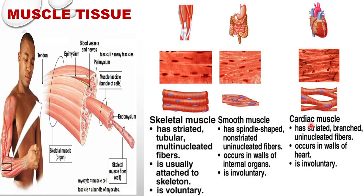The third type of muscle tissue is cardiac muscle. As the term implies, it is the muscle that forms the heart — found exclusively in the heart. Cardiac muscles have striations but are branched, unlike skeletal and smooth muscles. They are uninucleated like smooth muscles and occur in the walls of the heart. Cardiac muscle is involuntary — we cannot control the beating of the heart. It is an autonomous organ that can regulate its own activity.